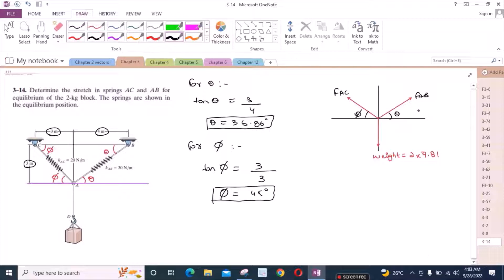Now I can also resolve these two inclined forces into their components. So I have one vertical component and one horizontal component. Let's call this FAB sin theta and this one is FAB cos theta.